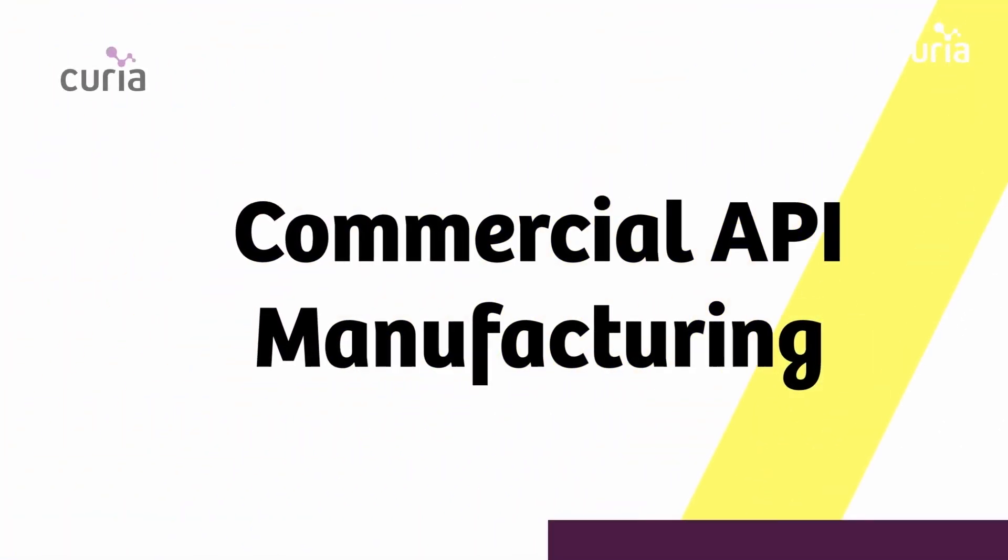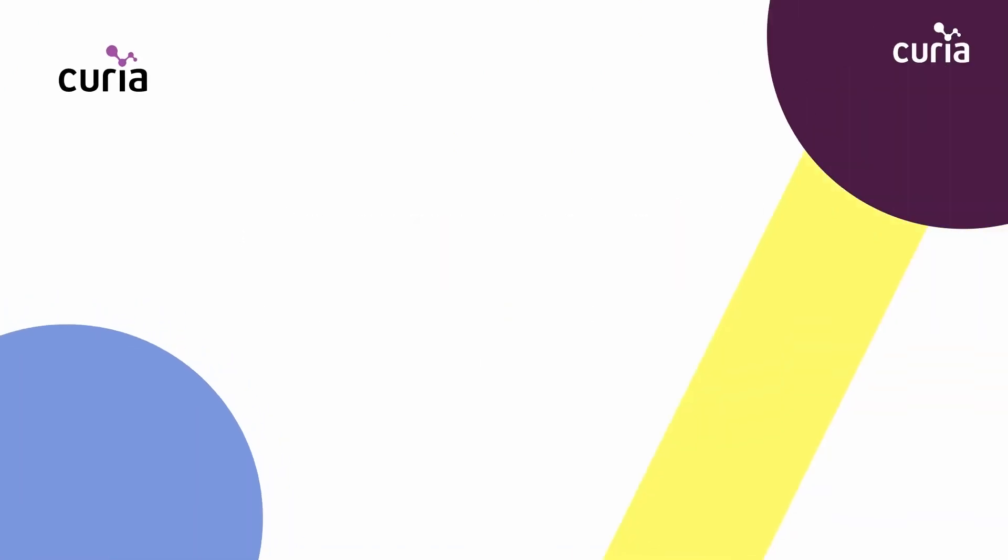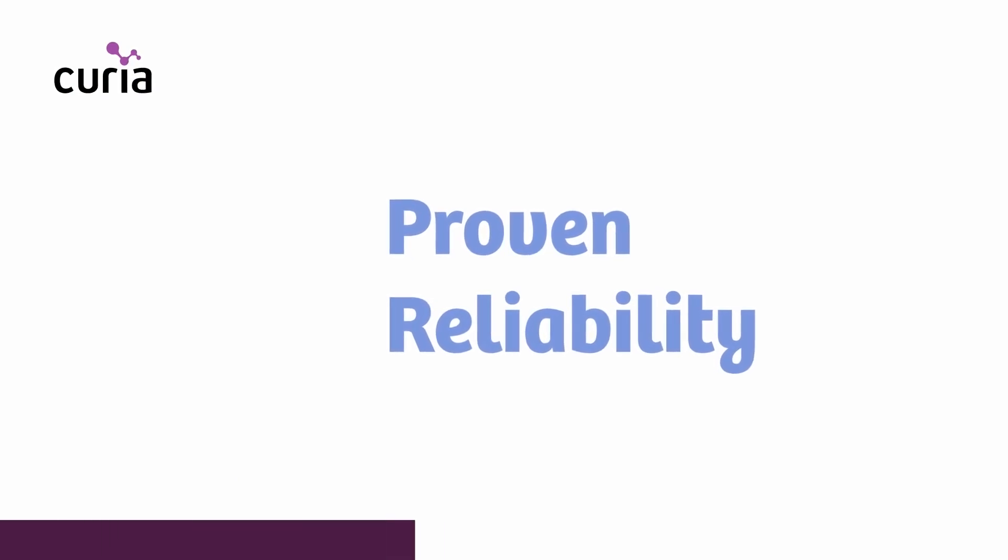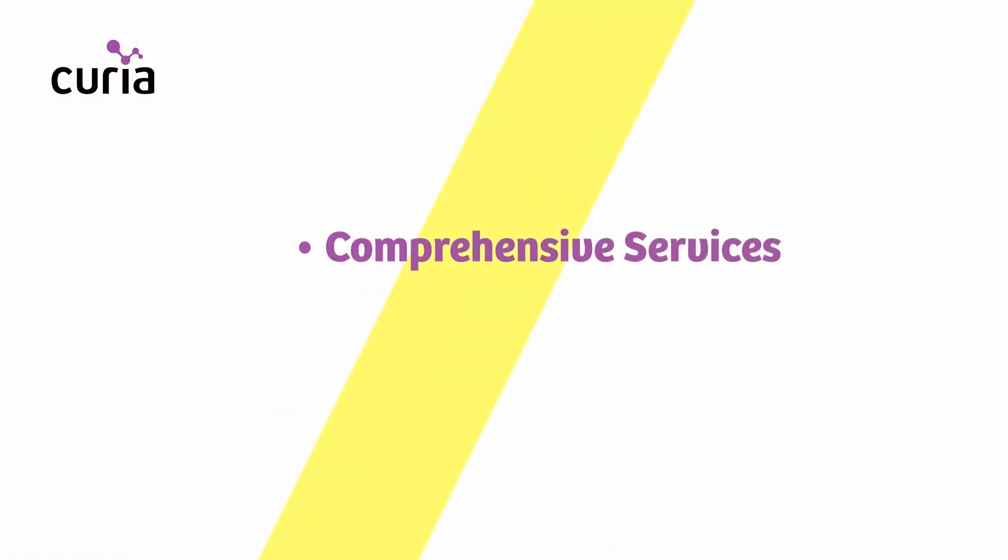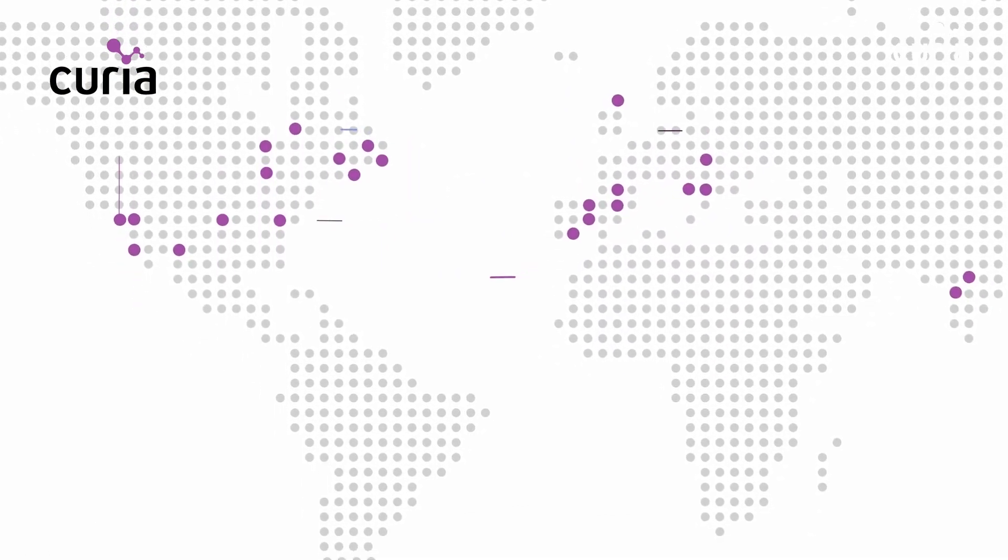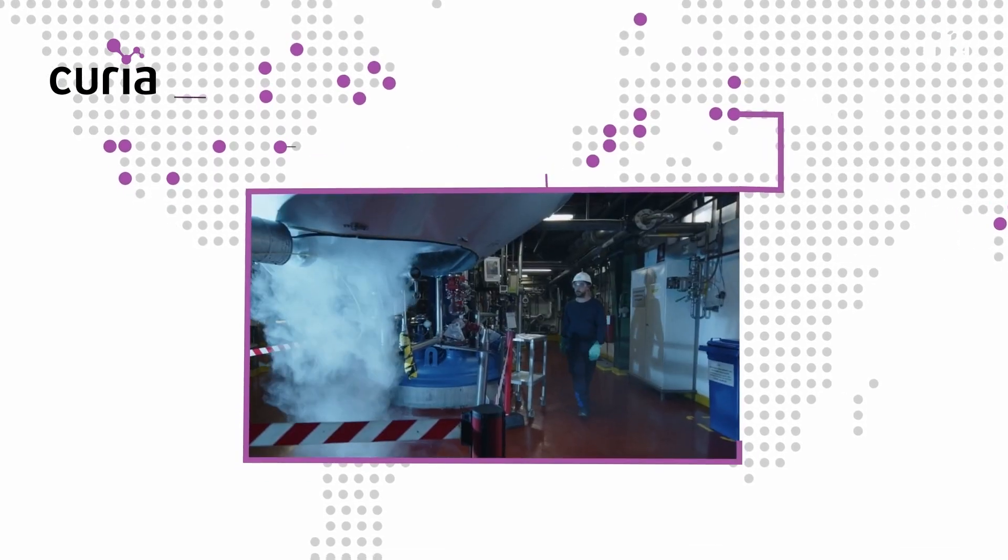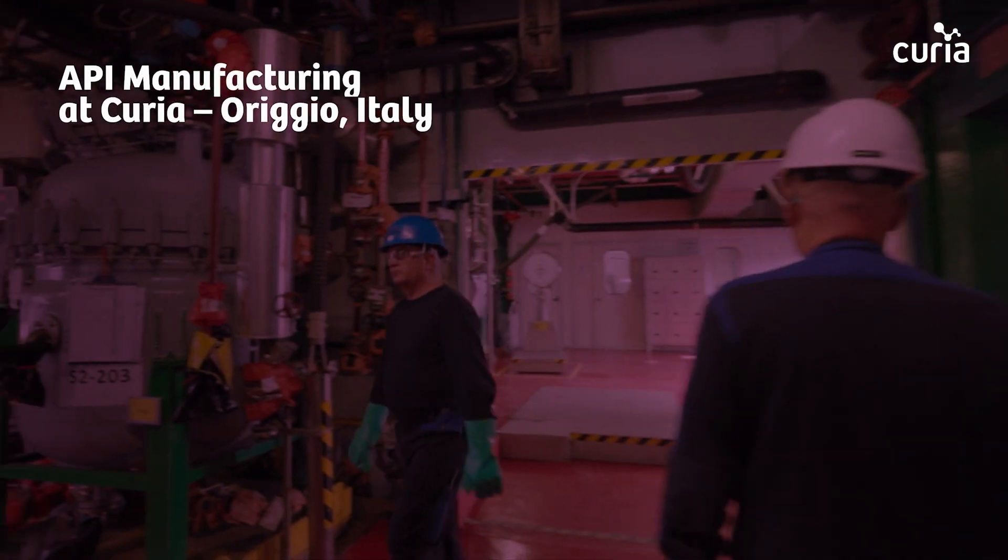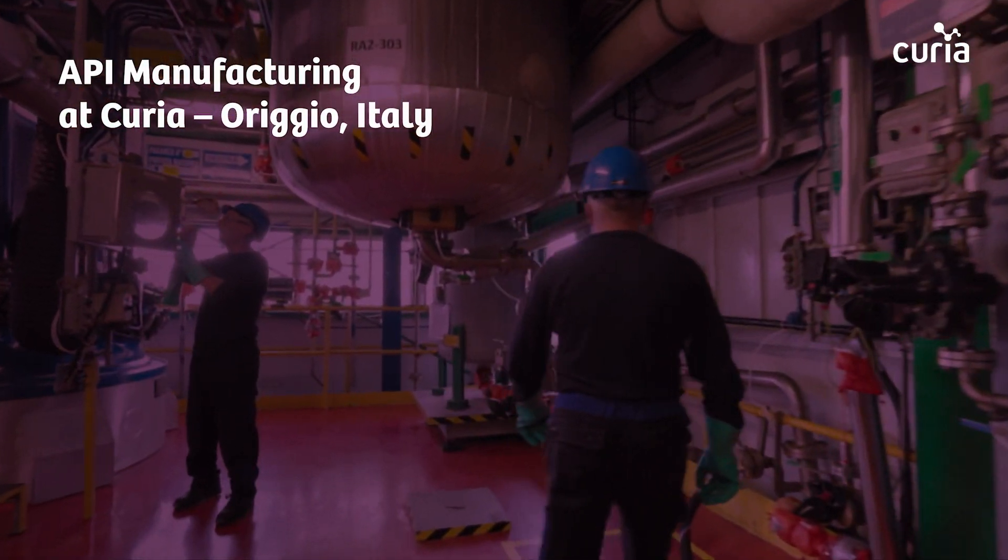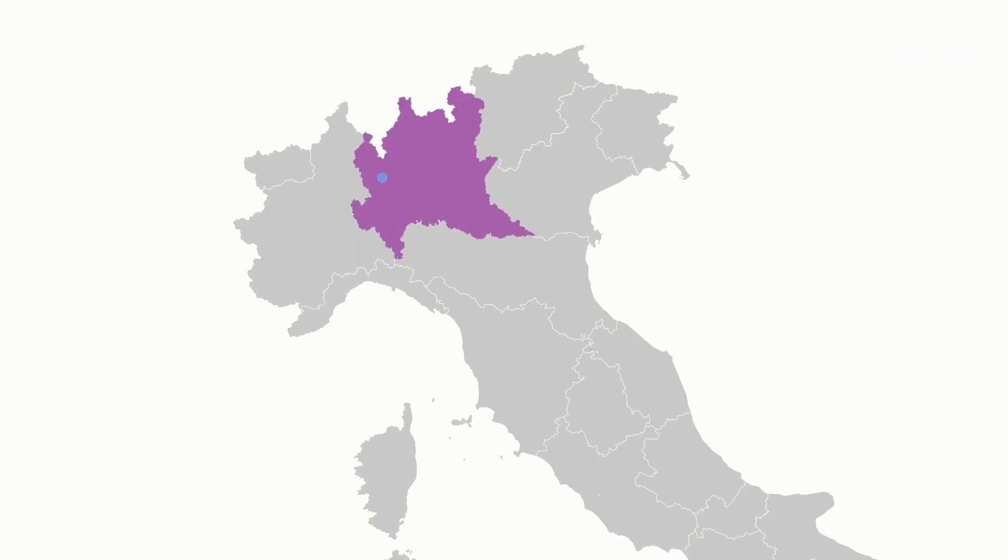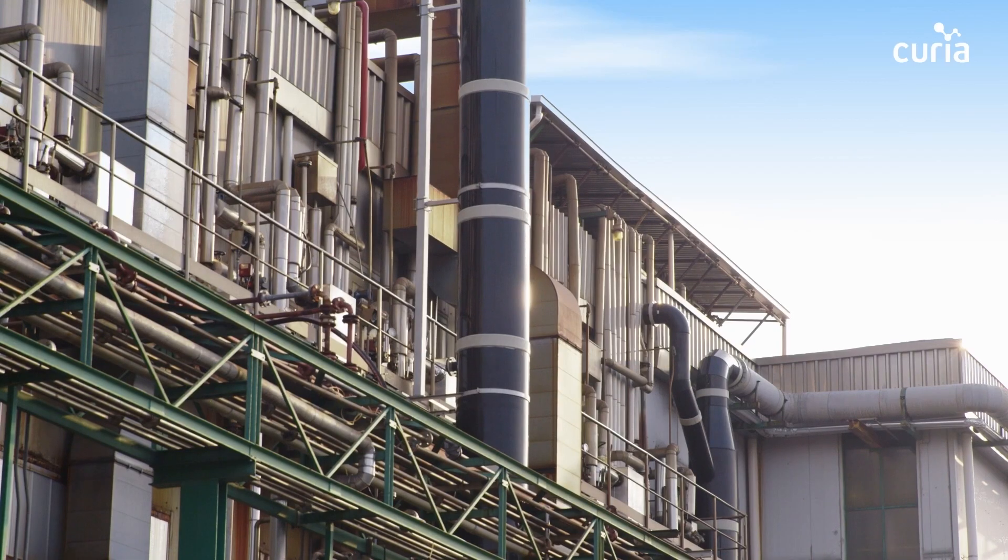API manufacturing at multi-ton scale, challenging chemistries, demanding timelines, proven reliability. A comprehensive suite of support services on-site, backed by Curia's global network of scientific expertise. This is Curia's site in Origgio, Italy, 26 kilometers north of Milan on a 16-hectare site, Curia's API manufacturing facility.